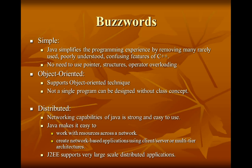We cannot write a single program without the OOP concept. Java is also a distributed language, meaning it has networking capabilities. Java makes it easy to work with resources across a network and create network-based applications using client-server or multi-tier architecture. J2EE supports very large-scale distributed applications.